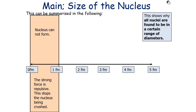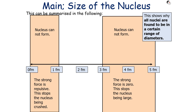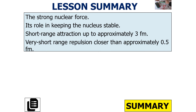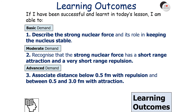To summarise the distance zones: between 0 and approximately 0.5 femtometres, the strong force is repulsive, which stops the nucleus from being crushed. The nucleus does not form past about 3.5 femtometres as the strong force is effectively zero there, preventing the nucleus from being very large. But between approximately 0.5 and 3 femtometres, the nucleus can form because the strong force is greater than the electromagnetic force and is attractive. So in today's lesson we've understood the strong nuclear force, its role in keeping the nucleus stable, its short range of attraction up to 3 femtometres, and its very short range of repulsion closer than approximately 0.5 femtometres.